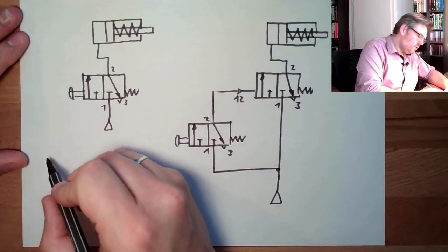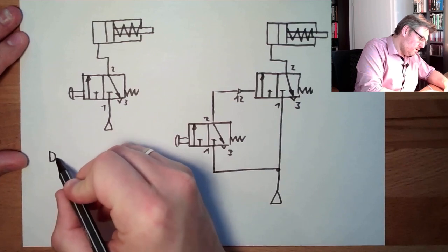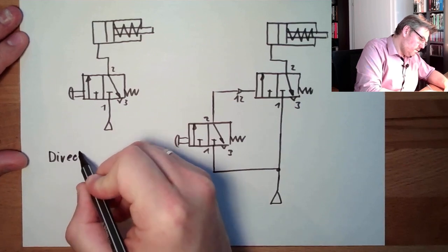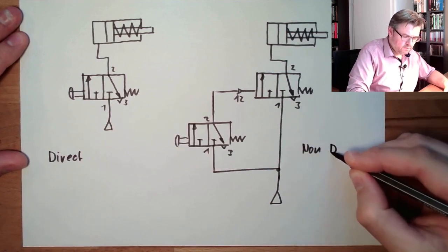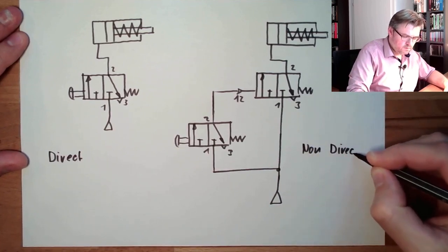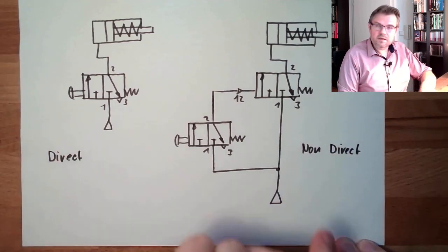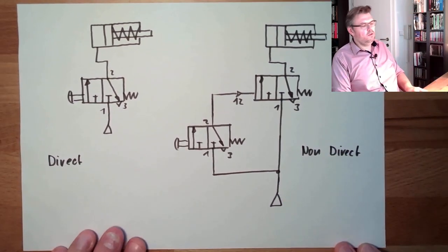This here is called direct, and this here is called non-direct or indirect, in German, control.